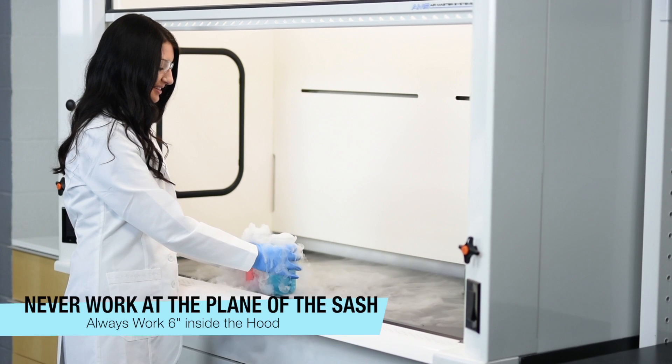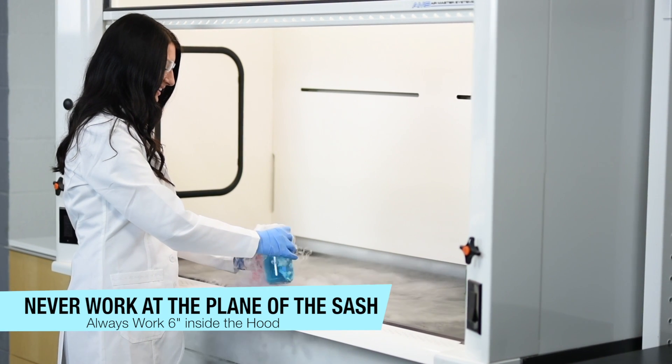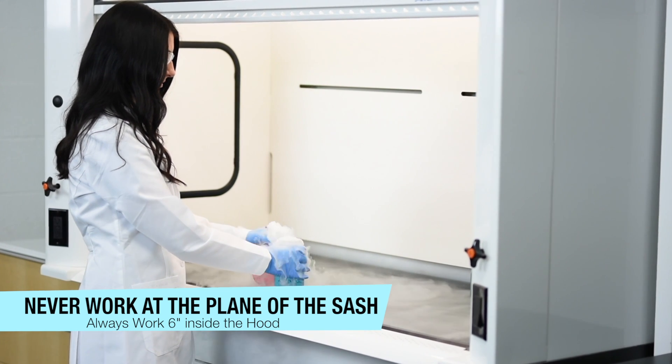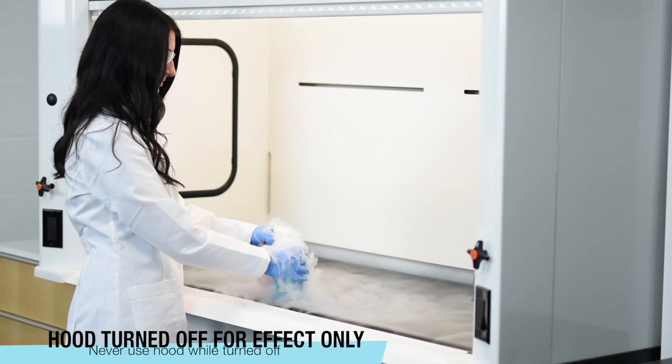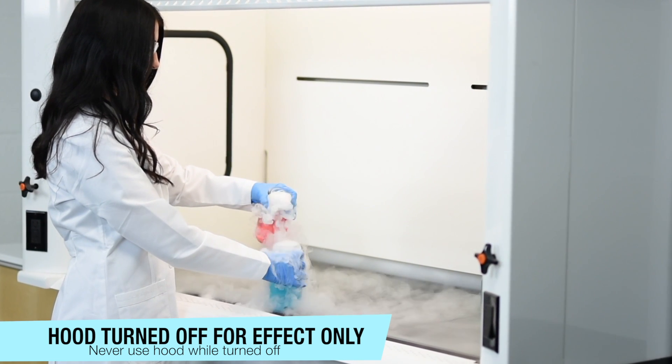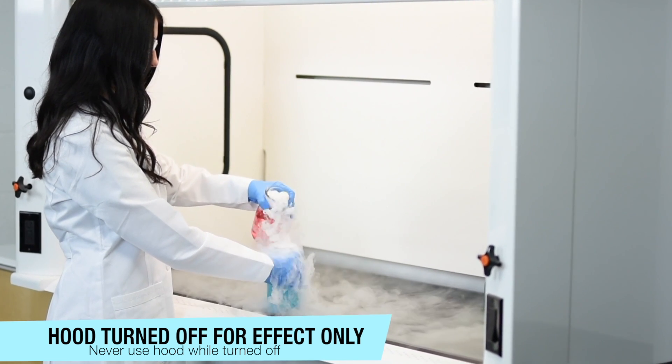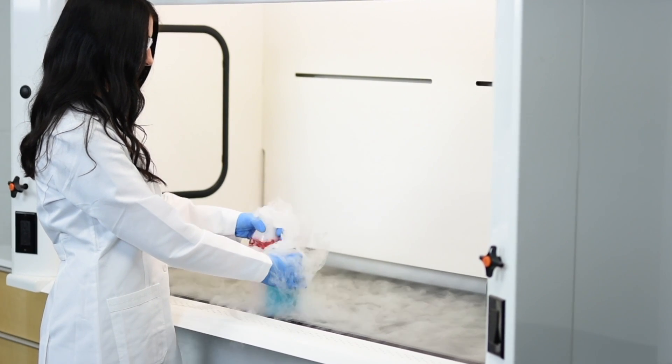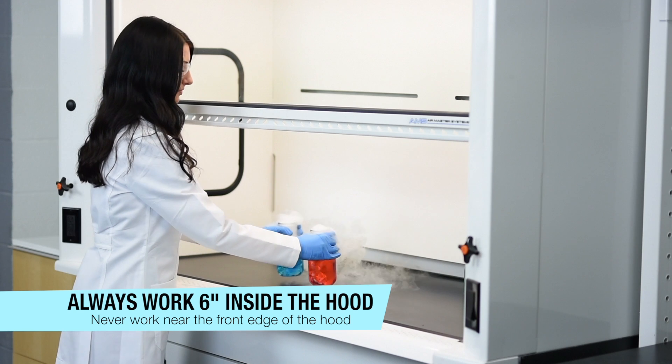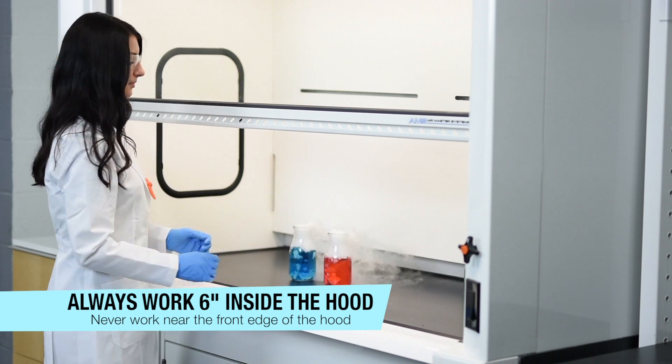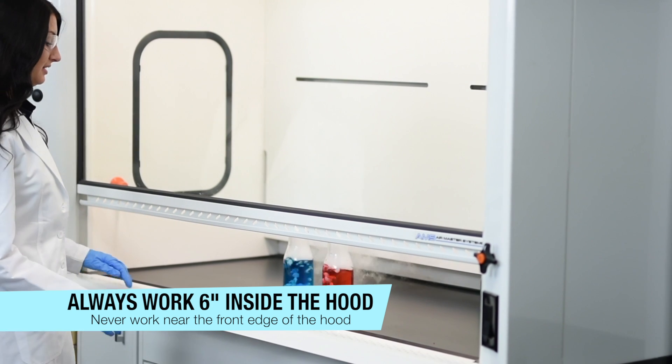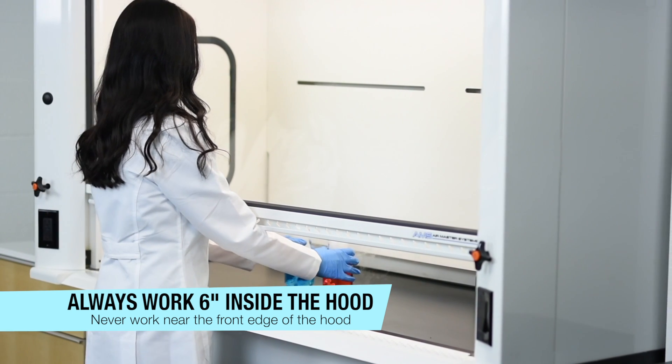Uh-oh this doesn't look good at all. The sash is entirely too high and we are working way too close to the front of the hood. As you can see we turned off the fume hood for dramatic effect. With the sash opened up too high and with your experiments way too close to the front this is a dangerous situation that should be avoided at all cost. Always be working at a minimum of six inches inside of your fume hood and always make sure that your sash is closed so it is below your face. The lower the better is always safer.